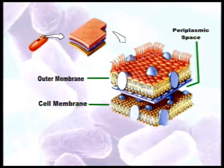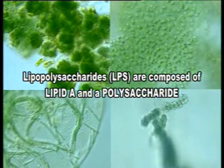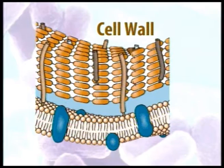Gram-negative bacteria have specific polysaccharides called lipopolysaccharides or LPS, also called endotoxins, on their walls. These are composed of lipid A and a polysaccharide. Endotoxins are sometimes also called pyrogens because they cause fever. Their function is that since they are toxic, they can kill mice, pigs, humans, and other hosts. Having discussed the cell wall, the next important component just inside it is the cell membrane.